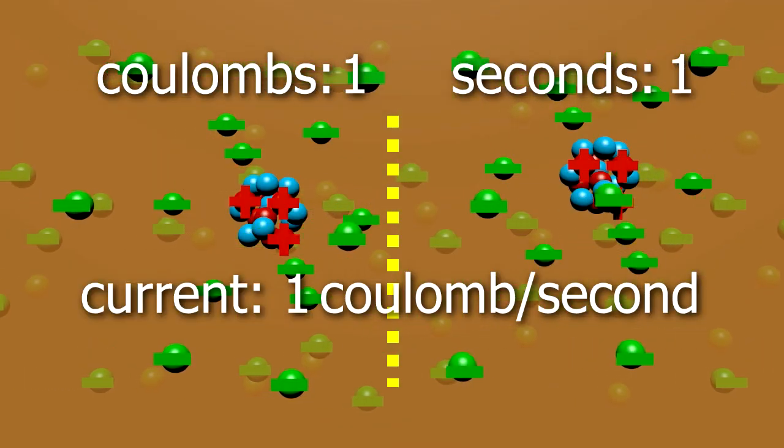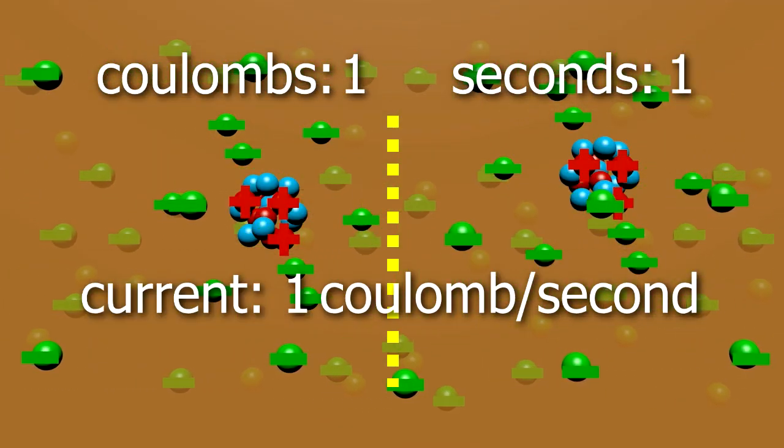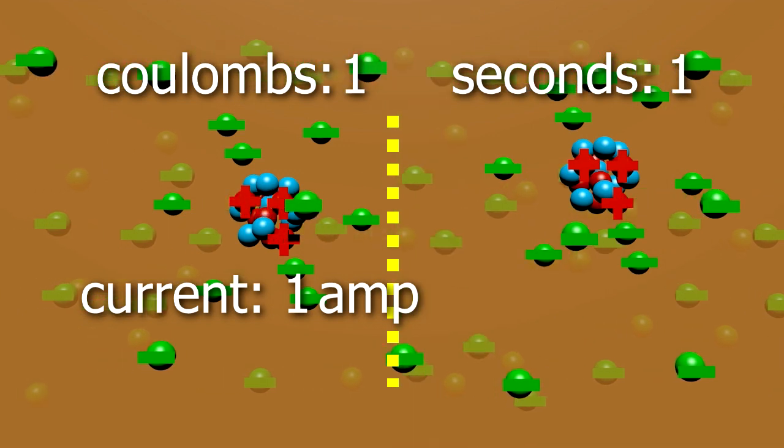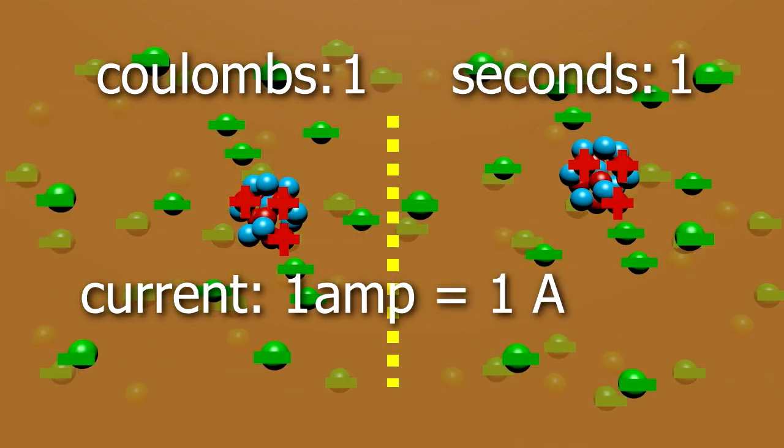But when doing electronics, we don't usually use the units coulombs per second. Instead we usually use the simpler unit, the amp. The symbol for the amp is A.